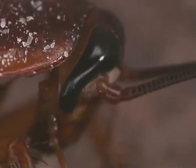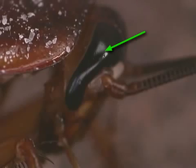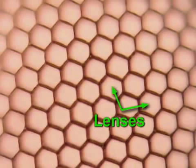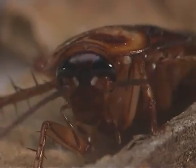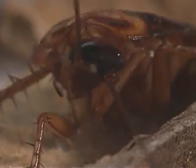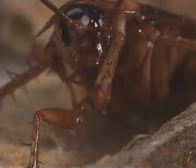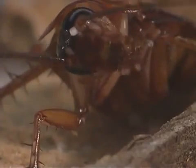Cockroaches, like other arthropods, have compound eyes. Compound eyes are different from human eyes. Compound eyes have many lenses for each eye, whereas human eyes have a single lens for each eye. The compound eye is excellent at detecting motion; therefore, insects respond better to moving objects than to stationary ones.